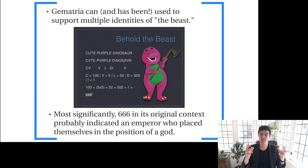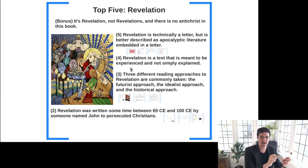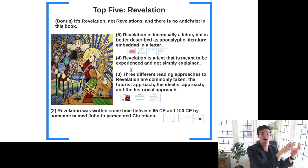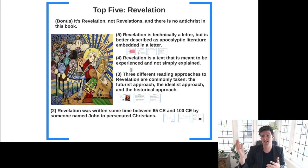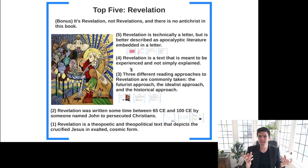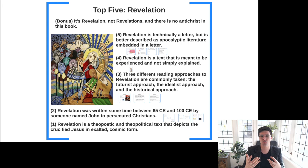If we situate Revelation as written under the reign of Nero, with Nero being referred to by 666, we're dealing with an earlier writing — namely during Nero's reign, around 65 CE. And if it's Domitian being referred to, we have Revelation written on the later end, being one of the last New Testament documents, at around 100 CE.